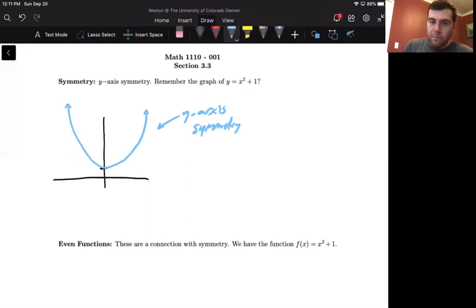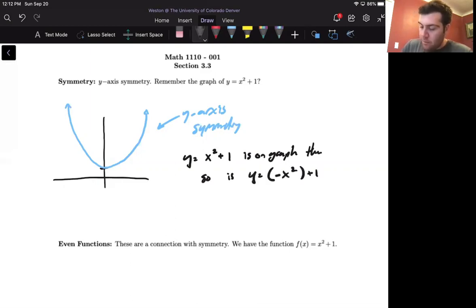Remember that we can check if a graph has y-axis symmetry. If y equals x squared plus 1 is on the graph, then so is y equals negative x quantity squared plus 1. That squared should be outside the parentheses.